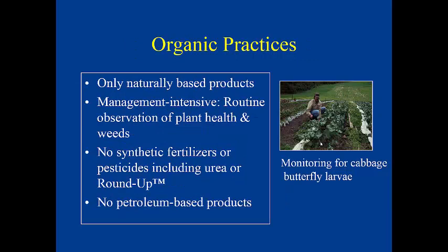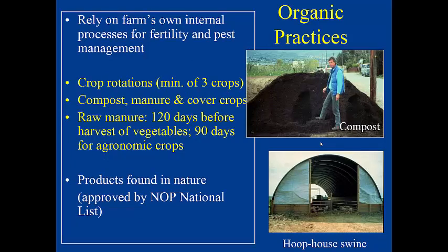For fertilization, you rely on the farm's own internal processes for fertility and pest management, practicing crop rotations — certified organic requires you cannot grow the same crop in the same place every year. Generally you'll have a minimum of three crops; the average vegetable farm has about 25. For nitrogen fertilization, you'll use compost, manure, and cover crops. Raw manure must be applied at least 120 days before harvest of vegetables, and 90 days for agronomic crops like corn and soybeans, for food safety reasons. Products used are found in nature and listed in the National Organic Program National List.